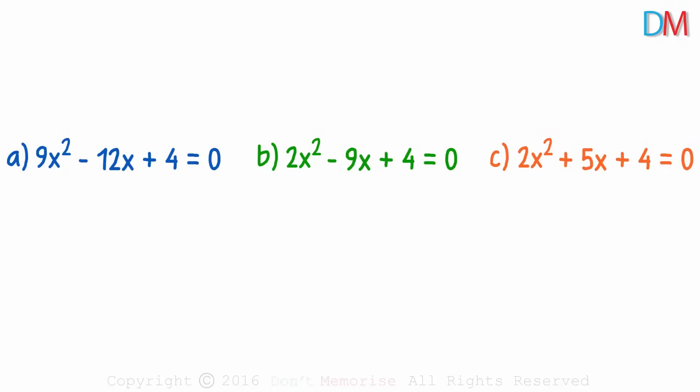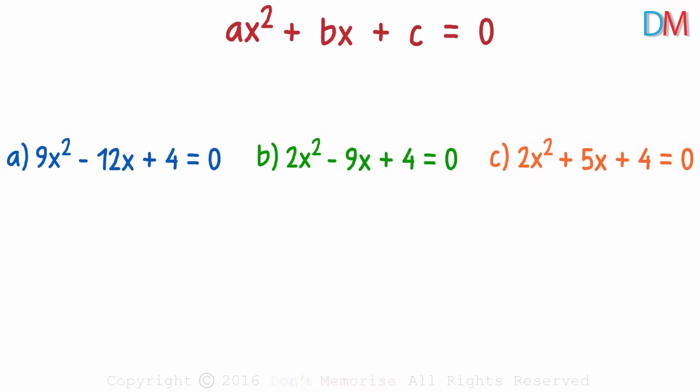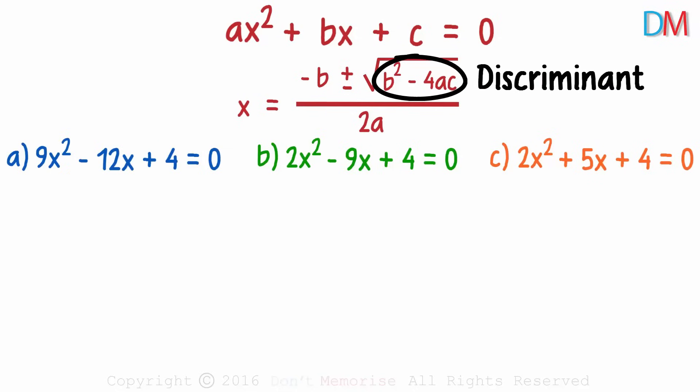The first thing we need to know is that for the quadratic equation ax squared plus bx plus c equals zero, the roots are given by this formula. And the nature of the roots depends on this value, which is called the discriminant.